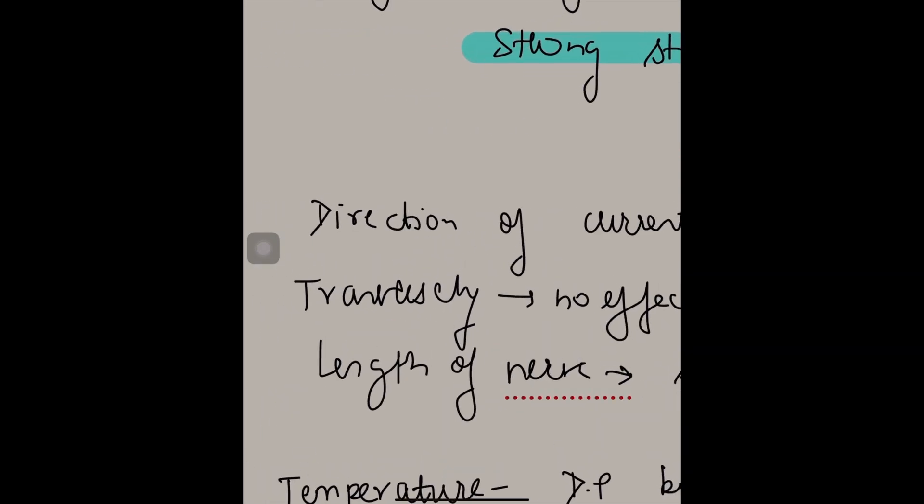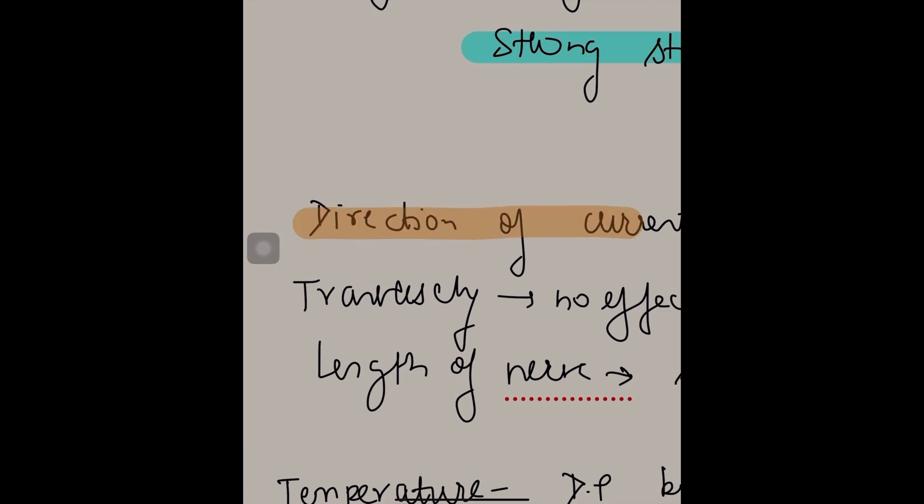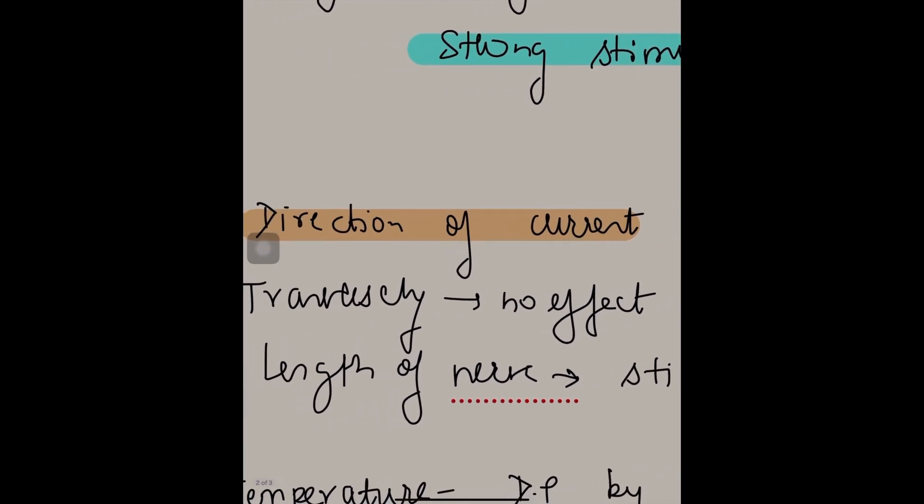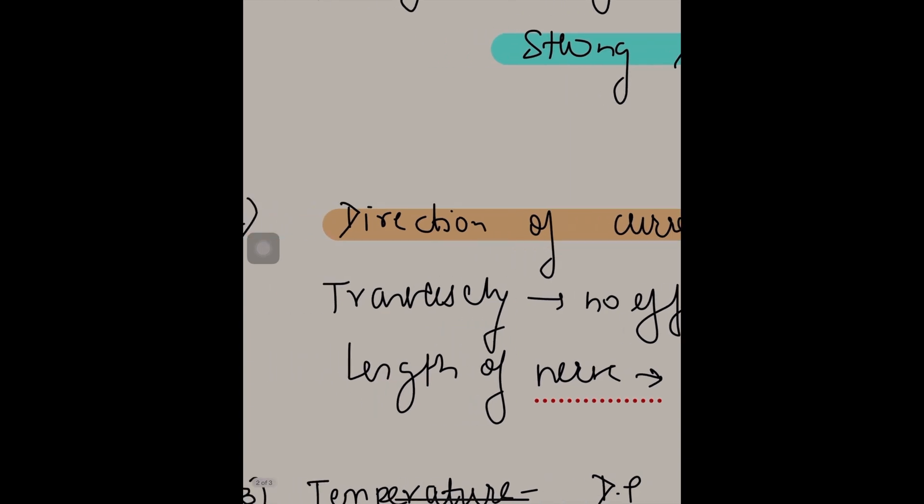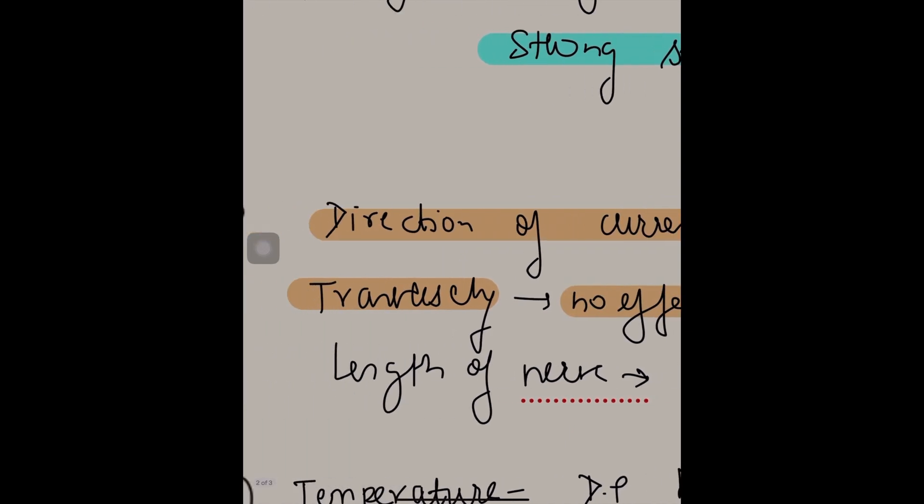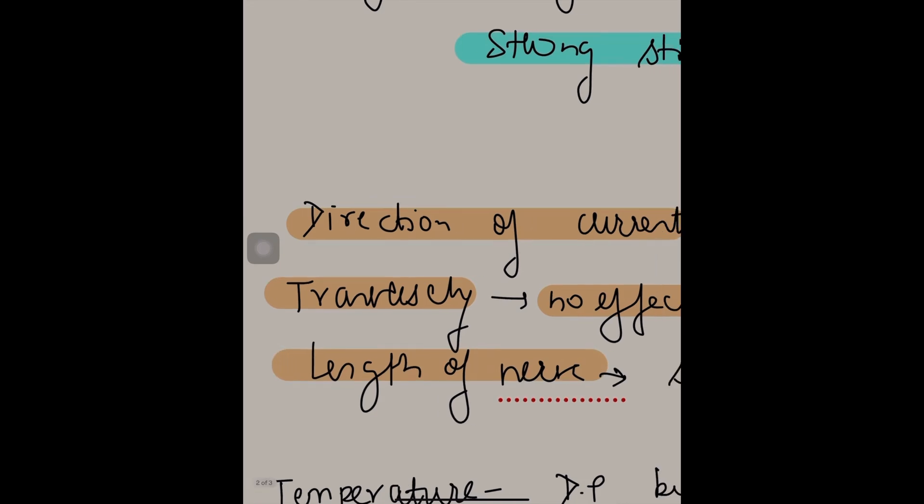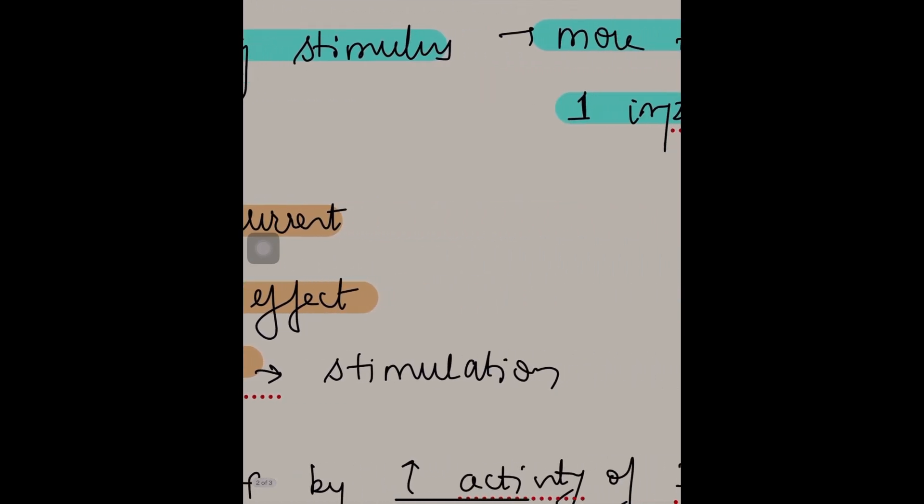Next factor, let us go to direction of current. If the direction of current is passed transversely along the nerve fiber, there is no effect. If it is passed along the length of the nerve fiber, there is stimulation.